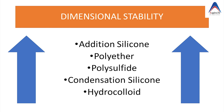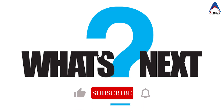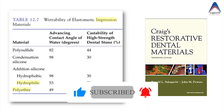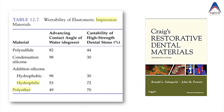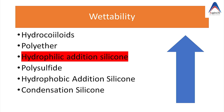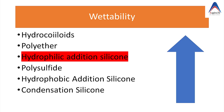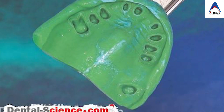Another important property routinely asked in exams is wettability. Since polyether has the lowest contact angle, it is truly hydrophilic. Although addition silicone is hydrophobic, it is now available with surfactant making it hydrophilic. Overall, condensation silicone is the least hydrophilic impression material. The most hydrophilic is hydrocolloid, followed by polyether in the rubber base impression material category.